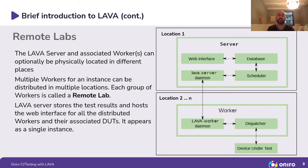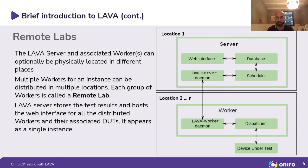I'll briefly explain the concept of Lava which is relevant here — the area called remote labs. As stated previously, Lava consists of the server and the worker. The Lava server and its associated workers can optionally be physically located in different places, meaning multiple workers can be in distributed locations. Each worker group is called a remote lab. The Lava server stores the test results and hosts the web interface for all distributed workers and their DUTs, so it all appears as a single instance.